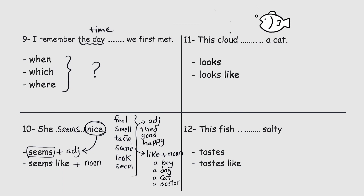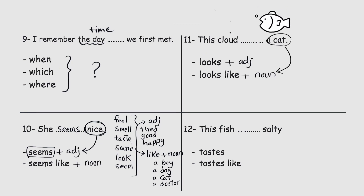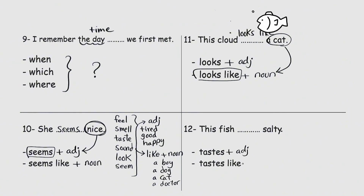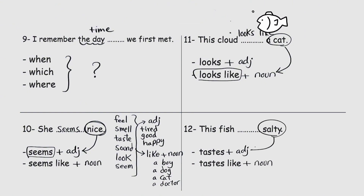This cloud blank a cat — looks, or looks like? 'Looks' is followed by an adjective, and 'looks like' is followed by a noun. 'A cat' is a noun, so the answer is 'looks like': this cloud looks like a cat. This fish blank salty — tastes or tastes like? 'Tastes' plus adjective, 'tastes like' plus a noun. 'Salty' is an adjective, so the answer is 'tastes': this fish tastes salty. Thank you for watching.